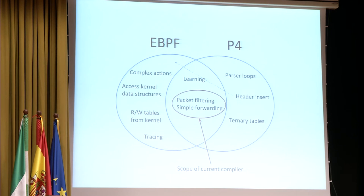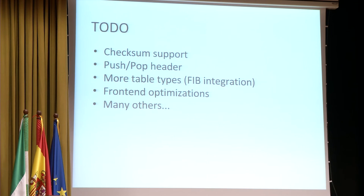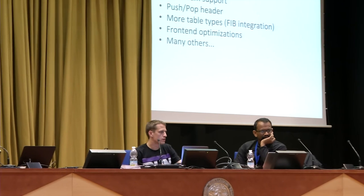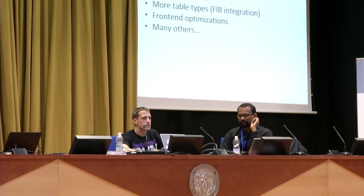There are improvements to make. Previously you couldn't do any header modifications—we added that support recently. Things we still need to do: checksum support, converging on the view of the world between P4 and BPF (P4 has the idea that you should be able to push and pop arbitrary headers, which you can't do with BPF), and integrating kernel FIB data structures as one of the BPF table options. The front end also needs a lot of work.